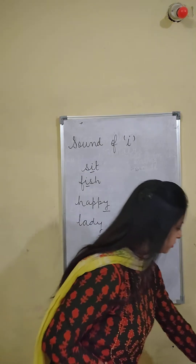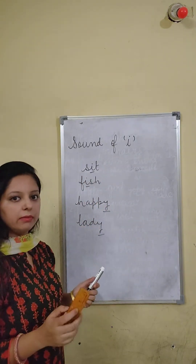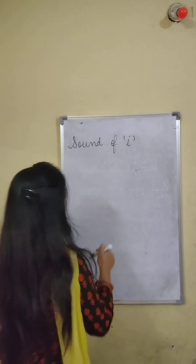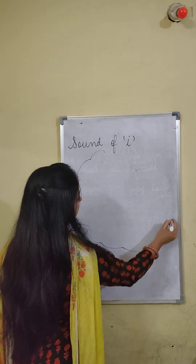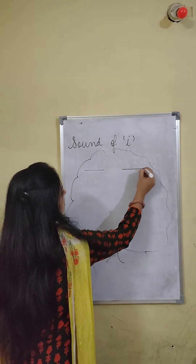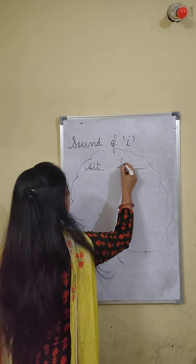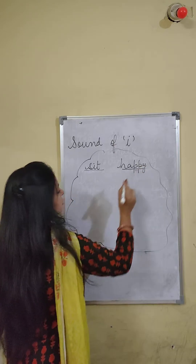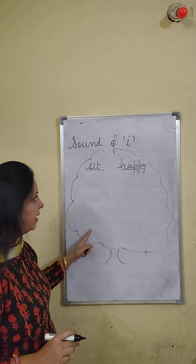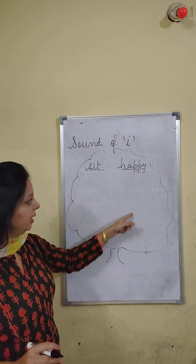So there is a tree on the next page. You have to sort the words according to the same sound — words with the same sound go together. Jin words mein I ki awaaz sit ki tarah hai, matlab E ki tarah hai, unko yahan likhna hai. Aur jin words mein Y ki awaaz E ki tarah hai, unko yahan likhna hai.